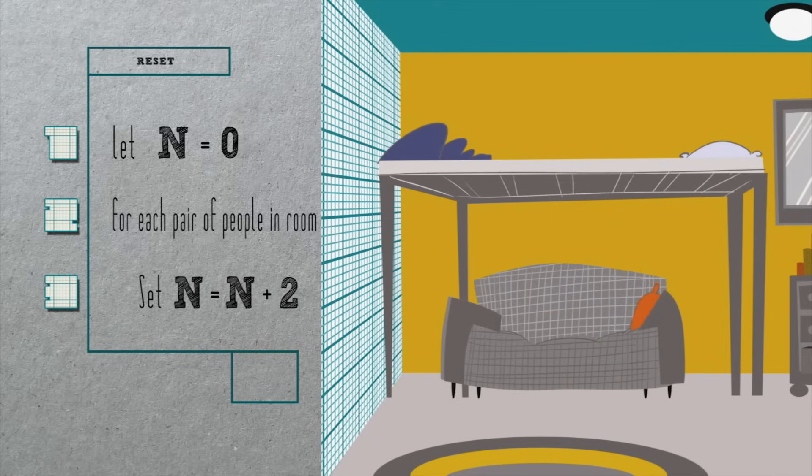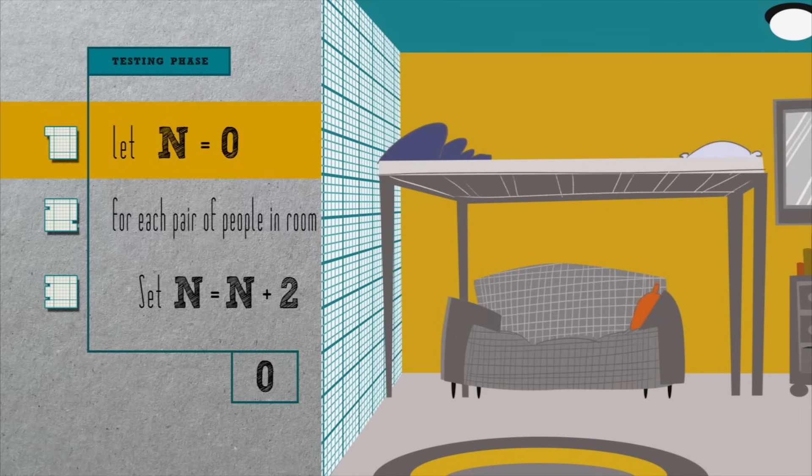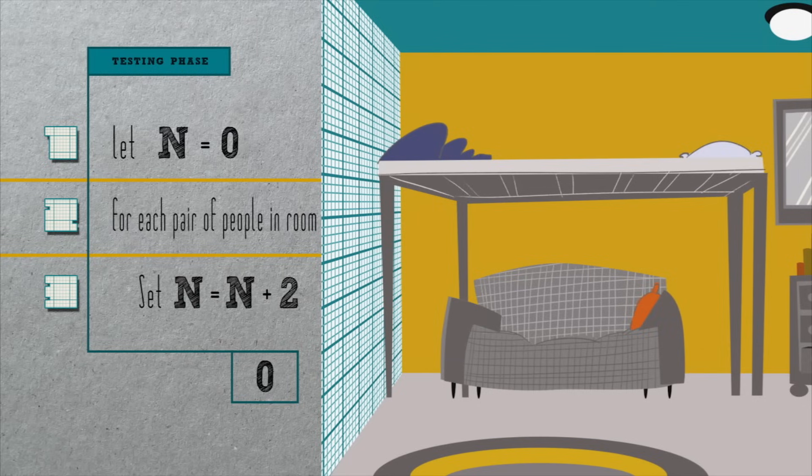Suppose next that there are zero people in the room. In line one, we initialize n to zero. As before, line three doesn't execute at all since there aren't any pairs of people in the room, and so n remains zero, which indeed matches the number of people in the room.